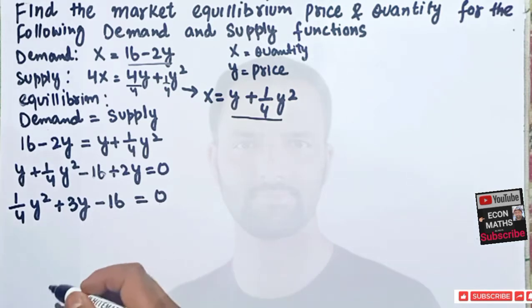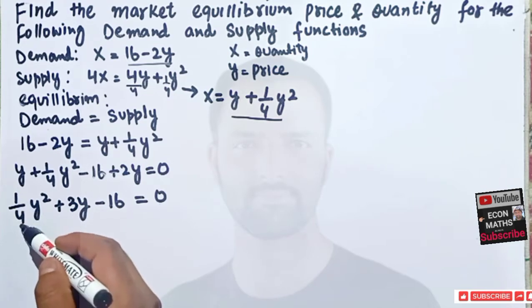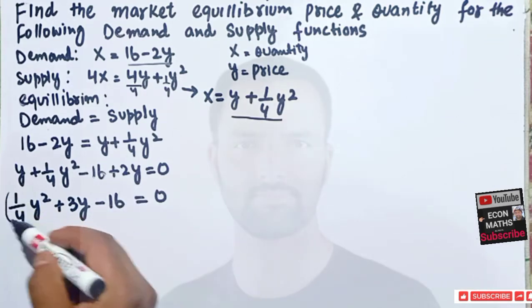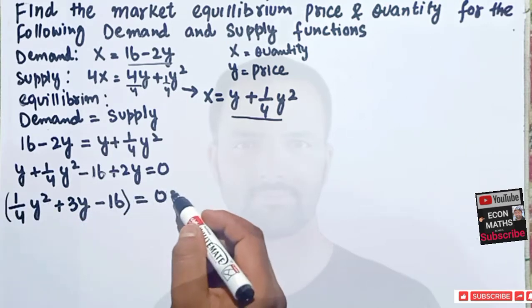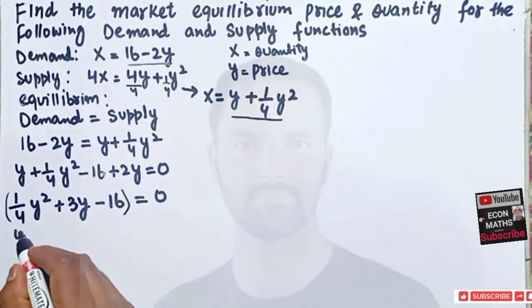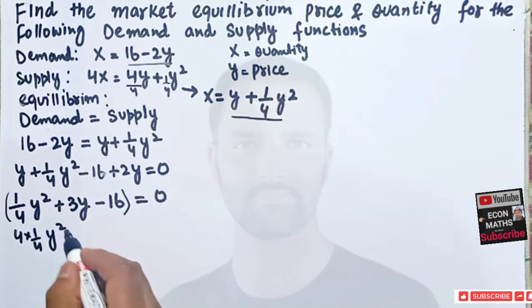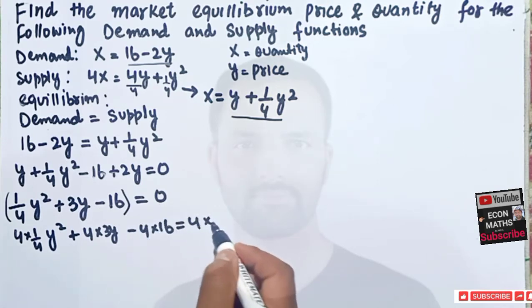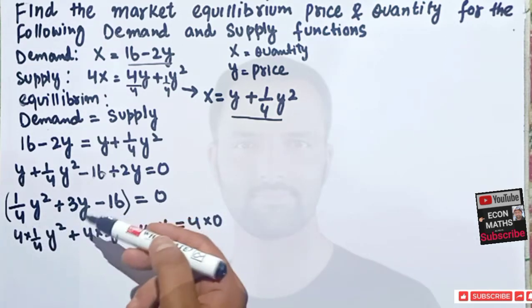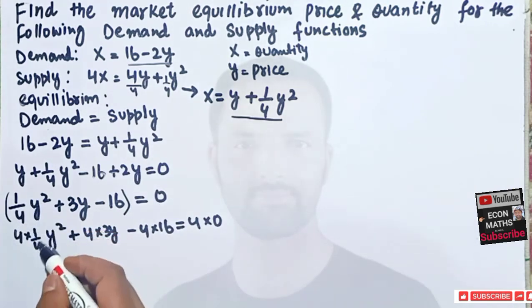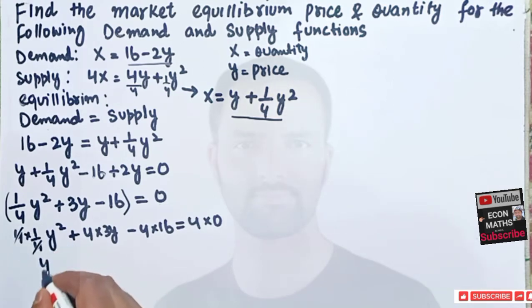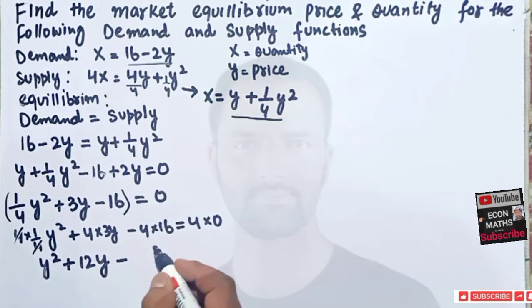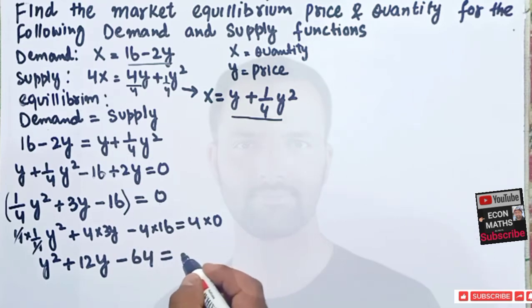To eliminate the coefficient 1/4 from the first term, we multiply both sides by 4. So: 4 × (1/4)Y² + 4 × 3Y - 4 × 16 = 4 × 0. This gives us Y² + 12Y - 64 = 0, which is our standard quadratic equation and is easy to solve.